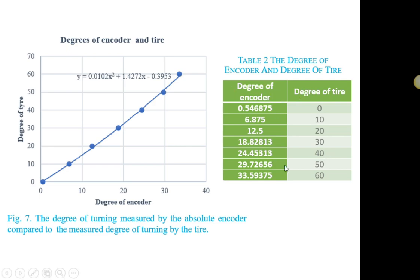So this is the degree of the encoder, which actually reads the value from the steering system. And this is the degree movement of the tire. This is the actual movement of the tire. And then we tabulate it in the graph and we get this function, which is that it is going to use to convert the degree of the encoder to the degree of the tire.